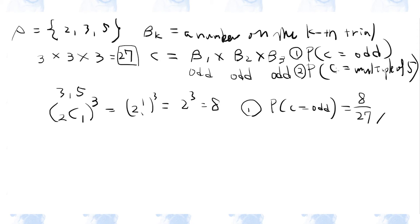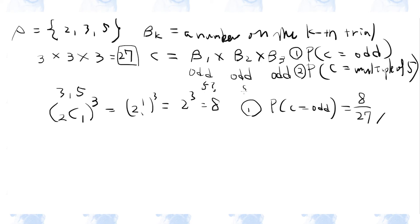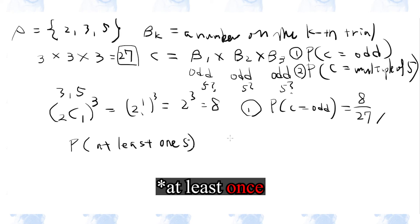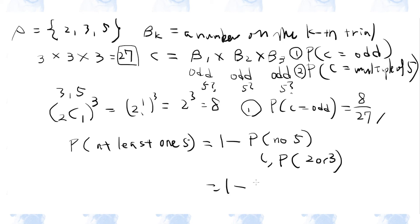For the second case, the probability that C is a multiple of 5: for the product to be a multiple of 5, at least one of the chosen numbers must be 5. The probability of choosing 5 at least once is 1 minus the probability of not choosing 5 at all. The probability of never choosing 5 is the same as always choosing from {2, 3}, which equals 8 over 27. Therefore the answer is 1 minus 8 over 27, which is 19 over 27.